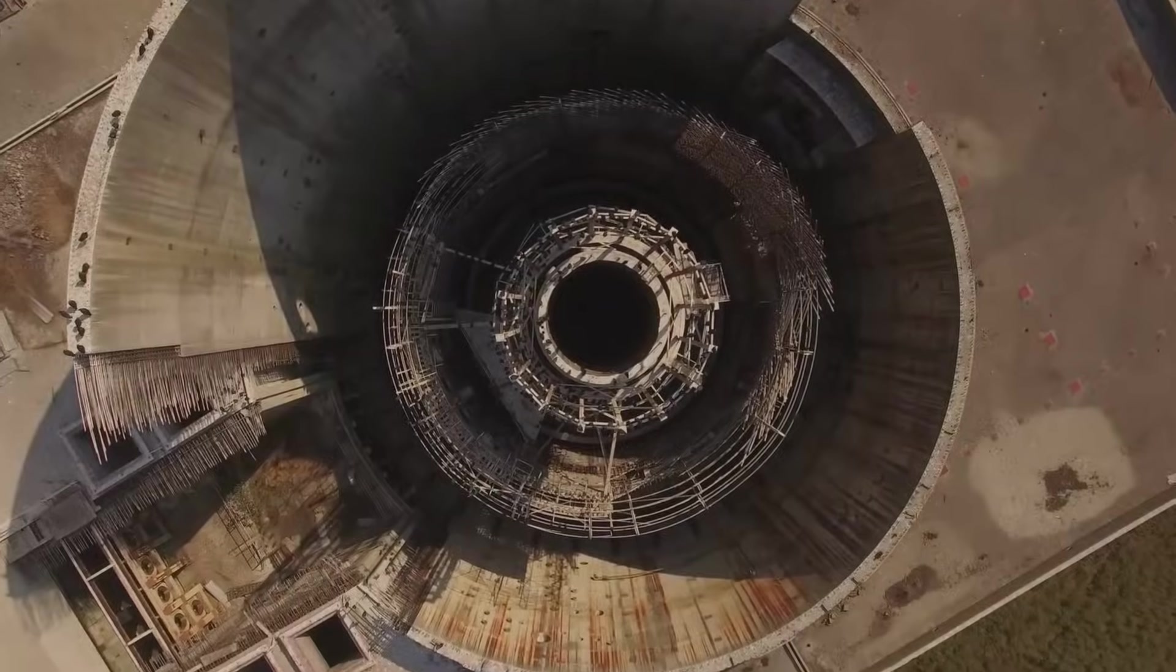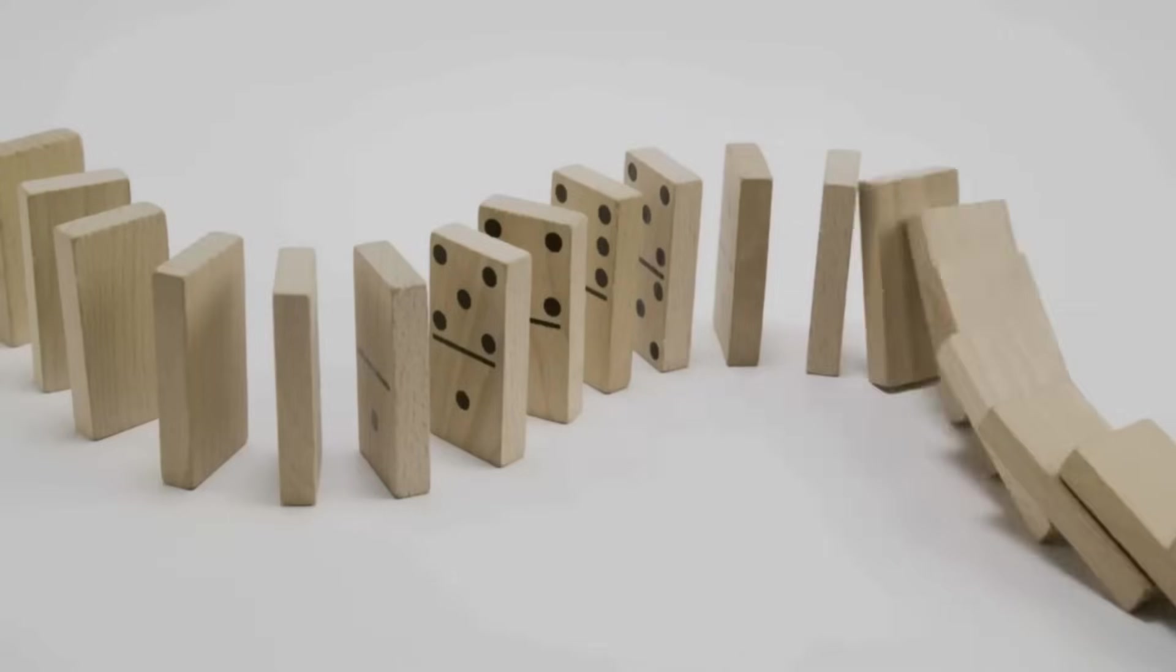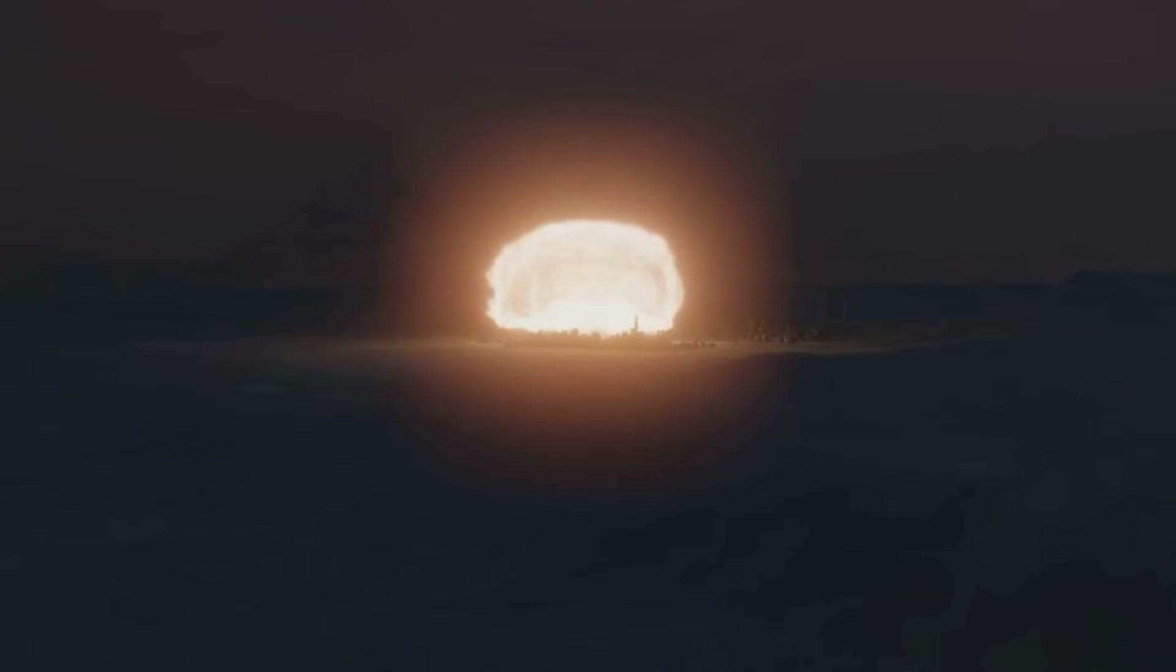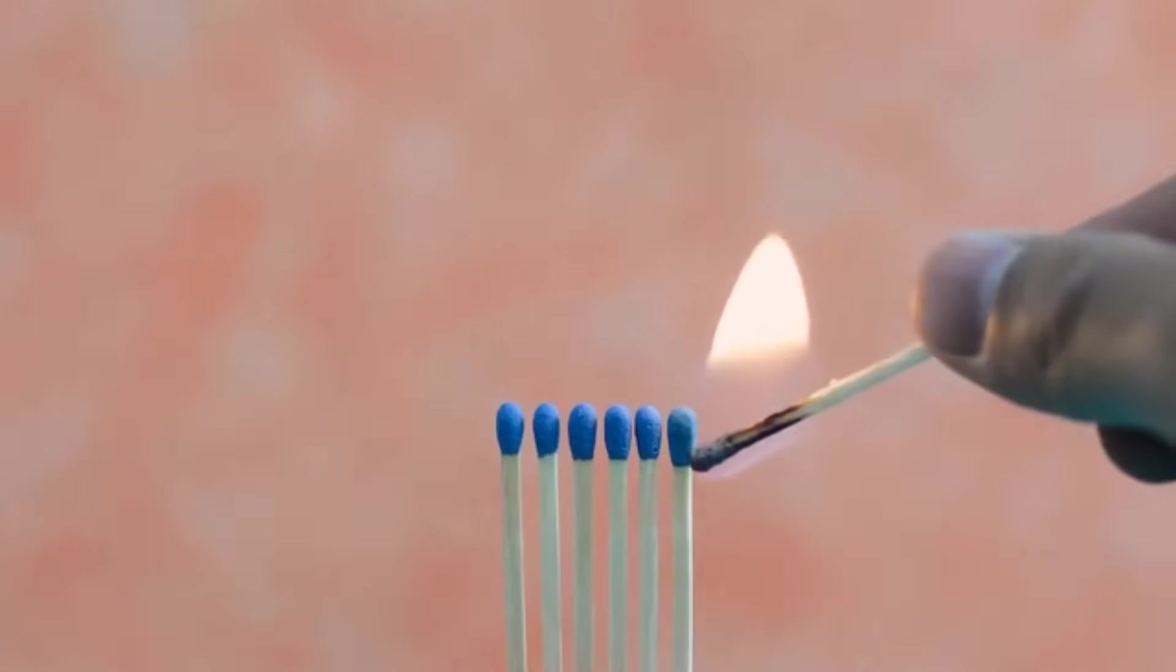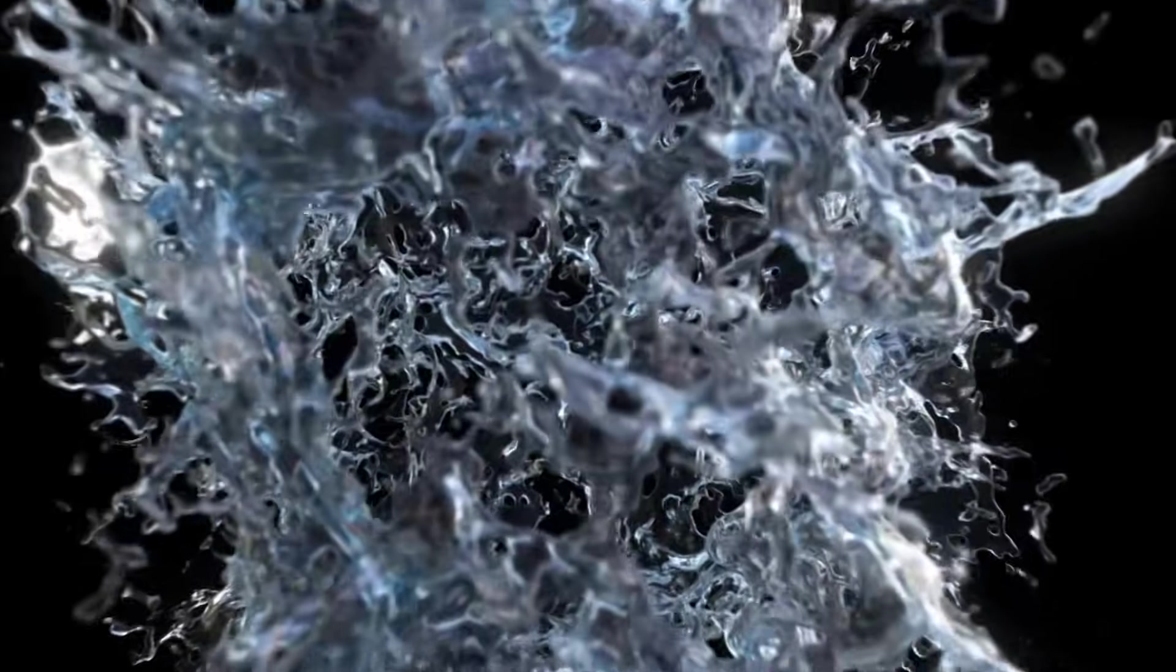Splitting one atom isn't enough to power anything. The real power comes from a chain reaction, like a row of dominoes falling. When a uranium atom splits, it releases neutrons that can split more atoms. Each split releases more neutrons, causing more splits and so on, growing exponentially. In a fraction of a second, this cascade releases a massive amount of energy.